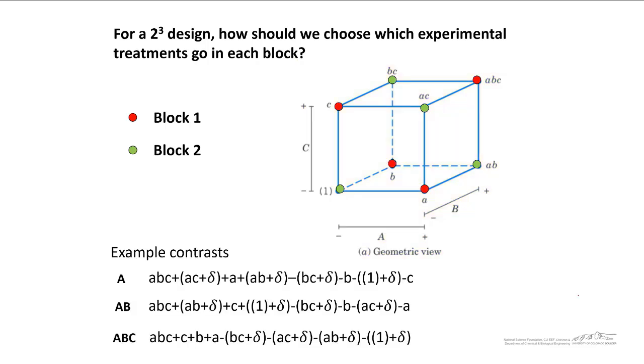Let's take a look at some example contrasts. The main effect of A would be given by this formula. AB and ABC are given by these formulas. If we take a look at this, we see that for the main effect of A, we have two positive deltas and two negative deltas. So the blocking effect is not confounded with the main effect for A.